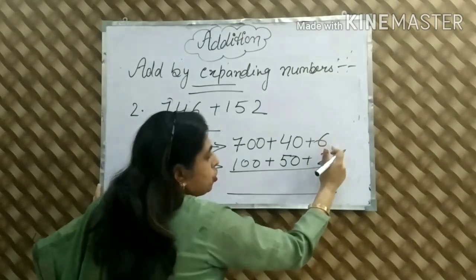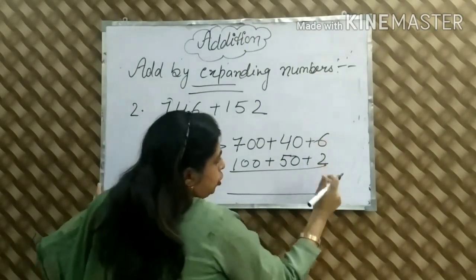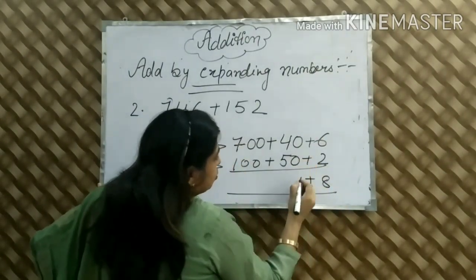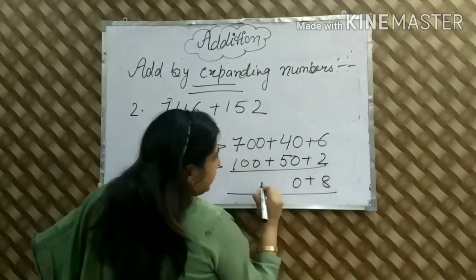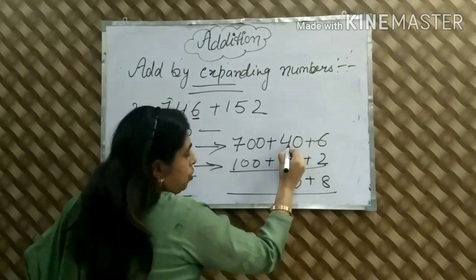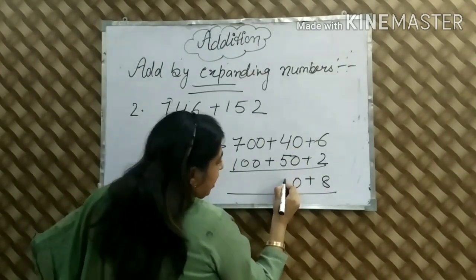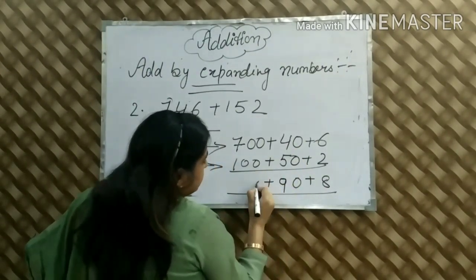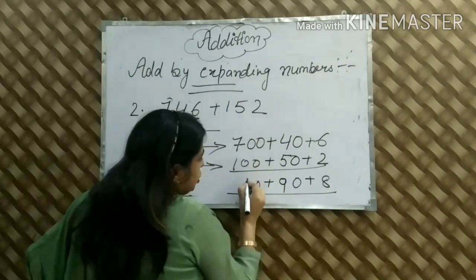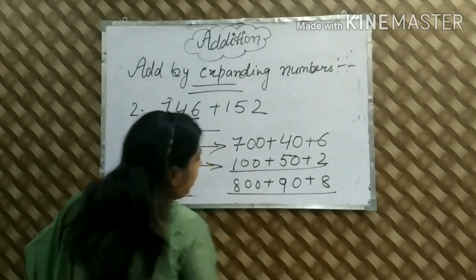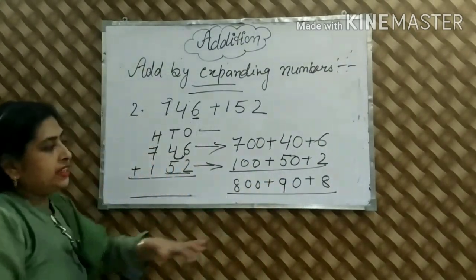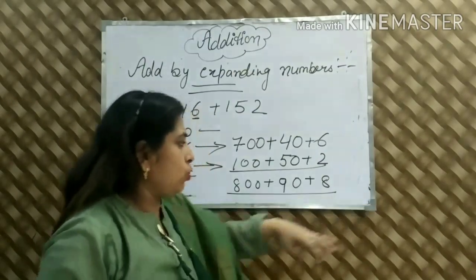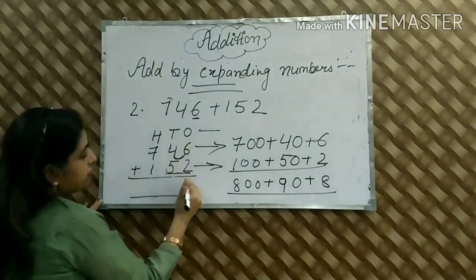We will solve this. We add 6 and 2 to get 8. Next we add 40 and 50 to get 90. Then 7 and 1 give us 8 hundreds. We solve this in expanding numbers and also in short form.